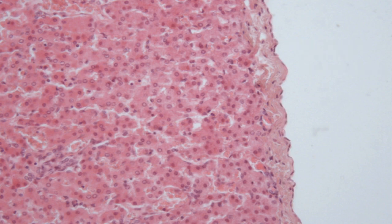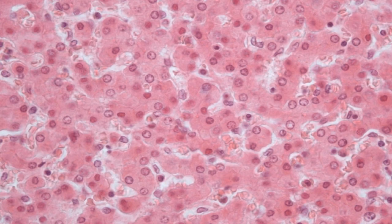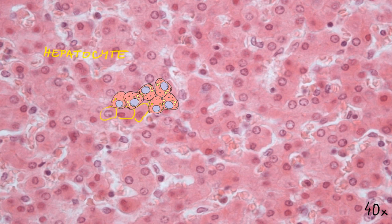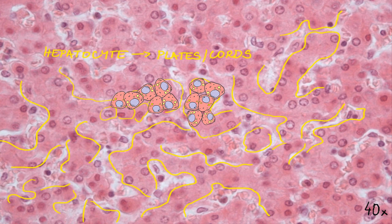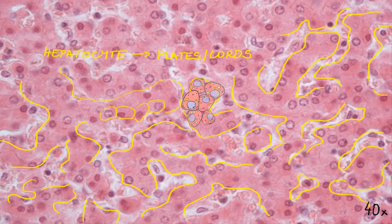The basic structural and functional unit of the liver is a liver cell, the hepatocyte. Hepatocytes are arranged in plates or cords which usually comprise two layers of cells. These cords anastomose with one another, joining up and creating a complex labyrinth.